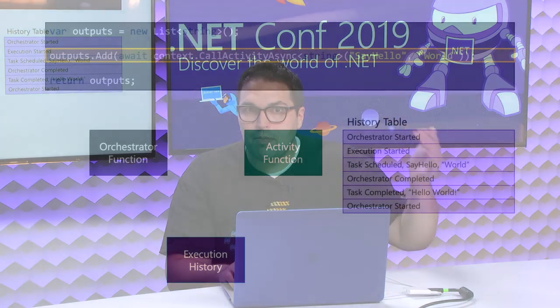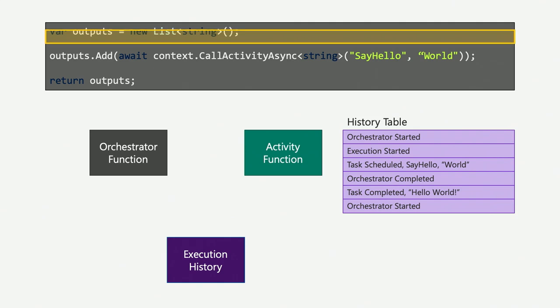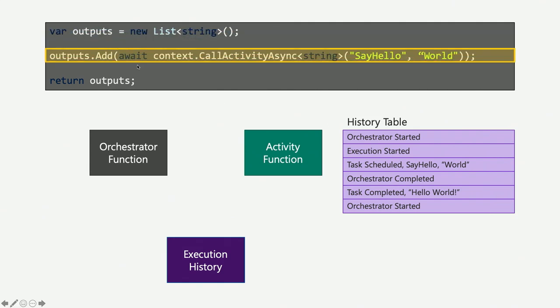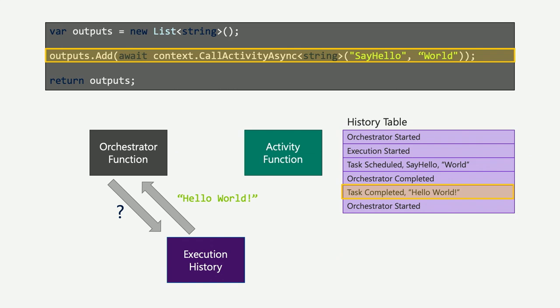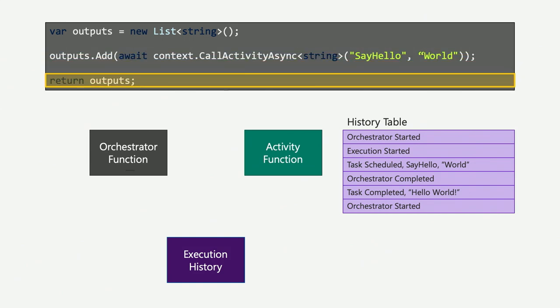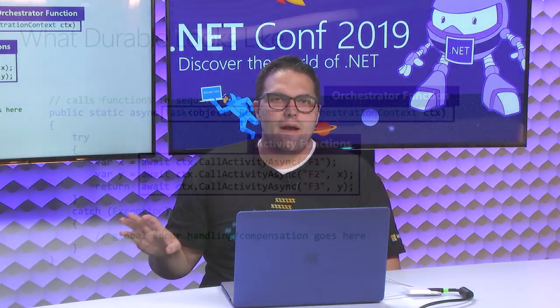It evaluates the first line, creates a new list. Then it gets to the second line with await, and makes the same check to the execution history: have I already said hello to the world? In this case, yes — the activity function did its work, created its outputs, and the result was 'hello world'. The function then moves to the next line. If you call another function and another function, this pattern continues — scheduling work, updating the history table, spinning up and starting again. All this happens behind the scenes; you just write the simple code shown earlier, while behind the scenes it's using storage, queuing and scheduling work, replaying the orchestrator, and rehydrating state every time it plays.